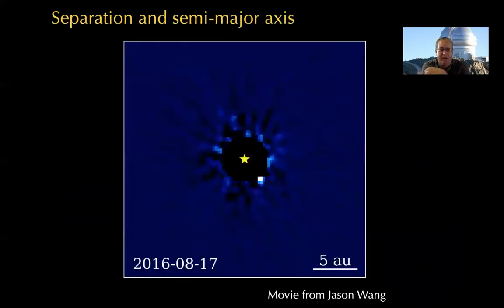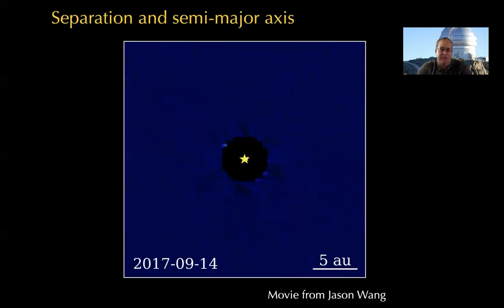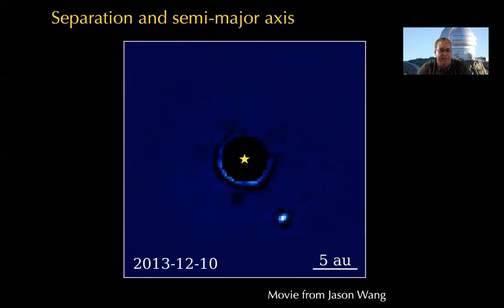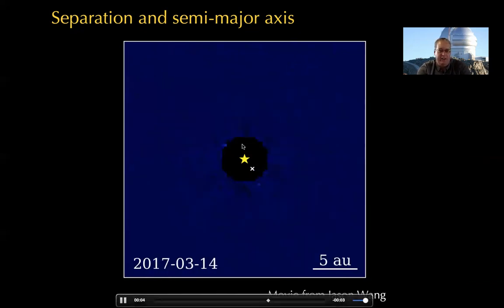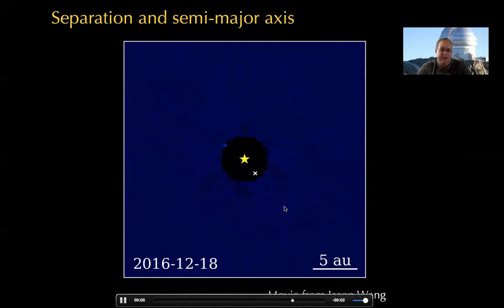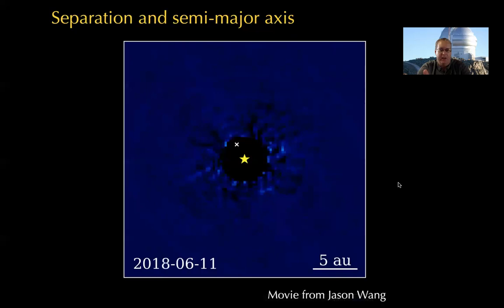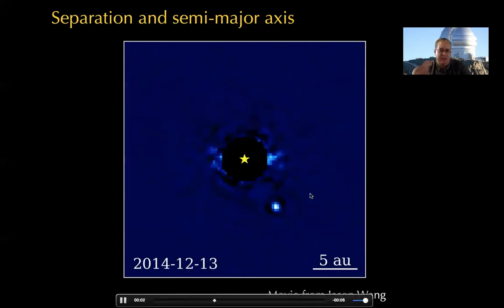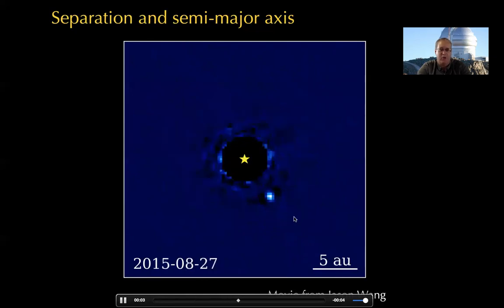One more point on completeness: orbital parameters are very important. Converting between projected separation on the sky and semi-major axis requires careful thought. The best example is Beta Pictoris b — using GPI data, you can see the planet has an almost edge-on orbit, very close to 90-degree inclination. Depending on when you observe the star, the planet could be 0.4 arc seconds away or almost exactly on top of the star. The projected separation changes over time and depends on orbital parameters — it gets very small for highly inclined orbits but stays relatively larger for more face-on orbits.